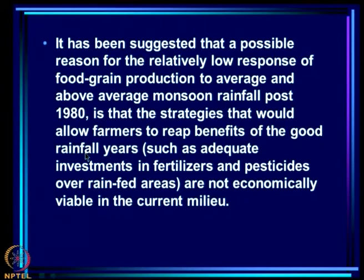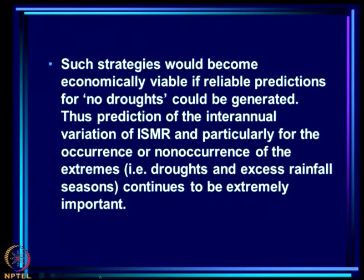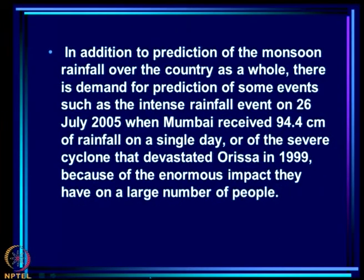Why is the response asymmetric? It has been suggested that even if rainfall is good, farmers cannot get good yields without sufficient investment in fertilizers and pesticides, and farmers are reluctant to make that investment because they do not know it is going to be a good rainfall year. Such strategies would become economically viable if reliable predictions of no-drought years could be generated. Thus prediction of the inter-annual variation of ISMR, particularly for the occurrence or non-occurrence of extremes — droughts and excess rainfall seasons — continues to be extremely important.